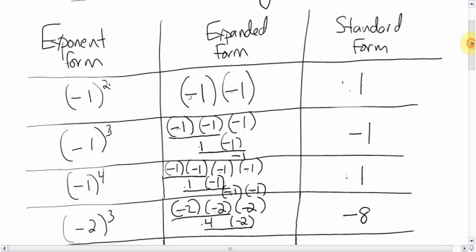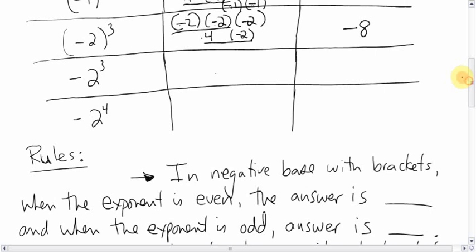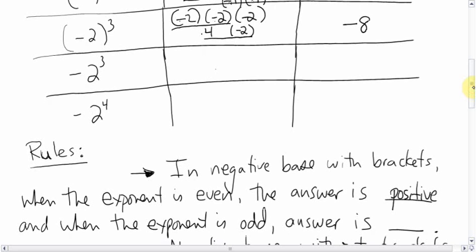Let's write that down as a rule. We'll skip two examples and come back to them later. For negative bases with brackets: when the exponent is even, the answer is positive; when the exponent is odd, the answer is negative.